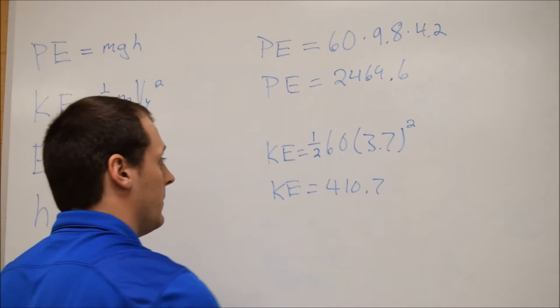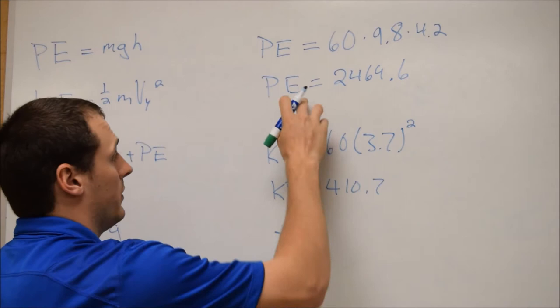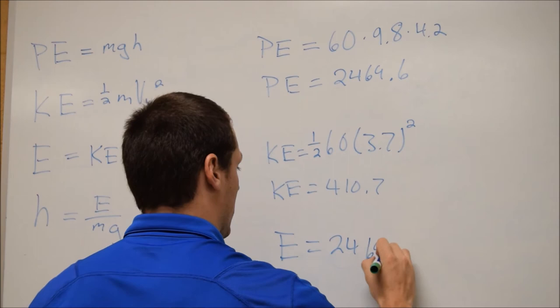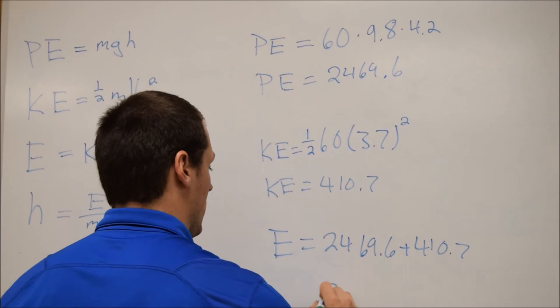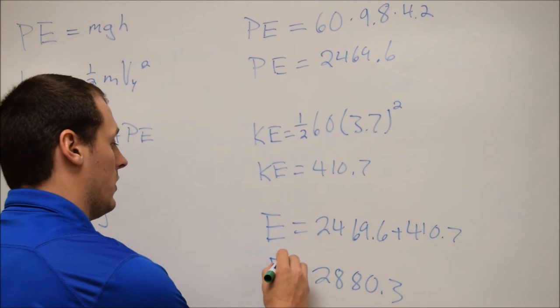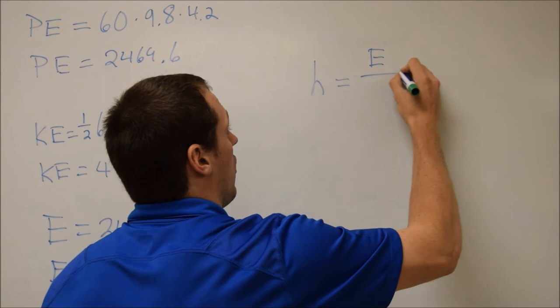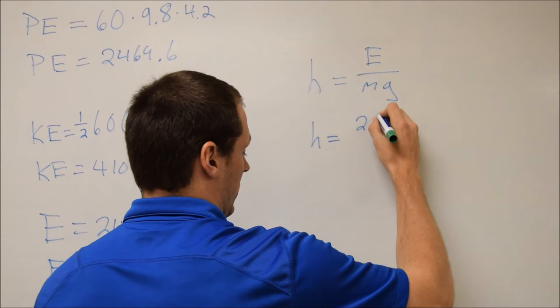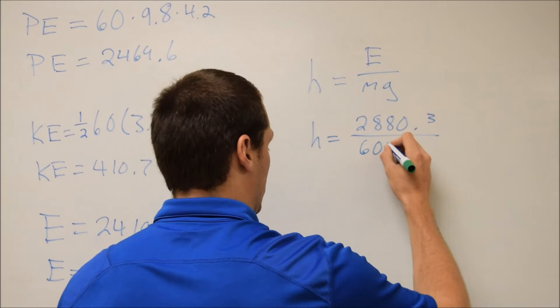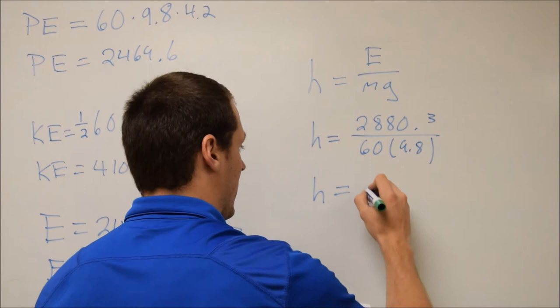So now the last thing we need to do is find energy, the total energy, which is just the potential plus the kinetic, so we end up with 2469.6 plus 410.7 and that's equal to 2880.3. So now we've got our total energy and we can do the last step to find the height like the problem is asking. So we have height is equal to the total energy over mass times gravity, so our height is going to be equal to 2880.3 divided by 60 times 9.8. So we'll do our math and we get total height of 4.9 meters.